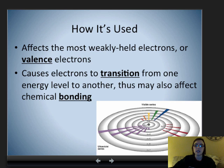So how it's used. The UV-Vis actually affects the most weakly held electrons, or the valence electrons, and this causes the electrons to transition from one energy level to another. It's just transitioning in the atom, it's not moving out of the atom at all. Just moving around through the different energy levels. This can actually affect the chemical bonding.